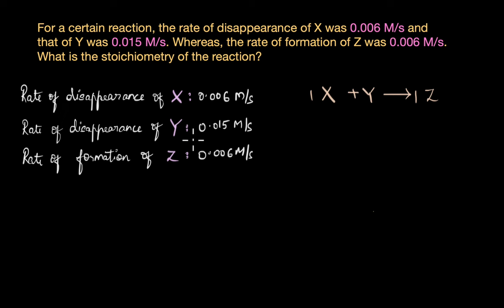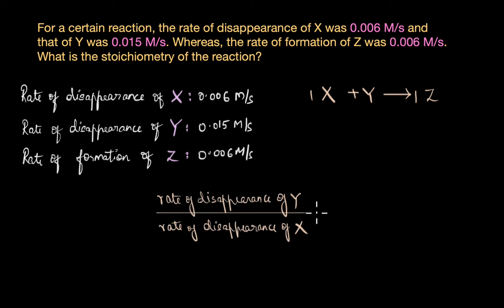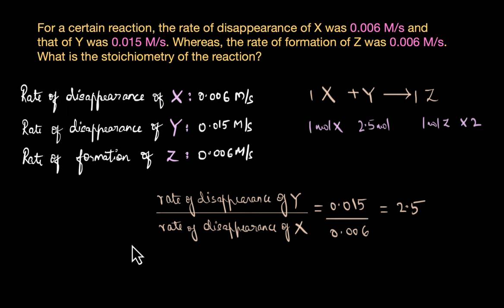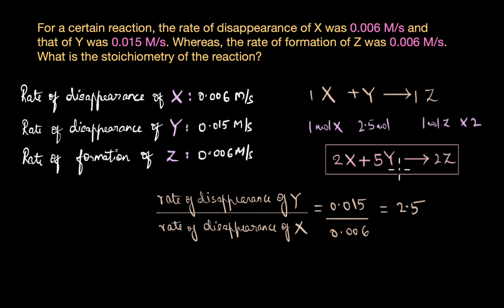What about Y? The rate of disappearance of Y divided by the rate of disappearance of X equals 0.015 divided by 0.006, which equals 2.5. So for every one mole of X consumed, we need 2.5 moles of Y, giving one mole of Z. Expressing this in whole numbers by multiplying by 2, we get the final balanced equation: 2X + 5Y → 2Z.